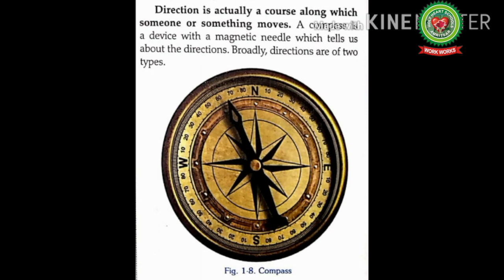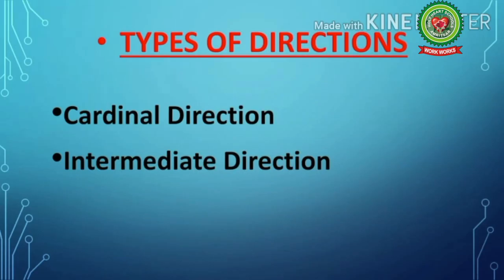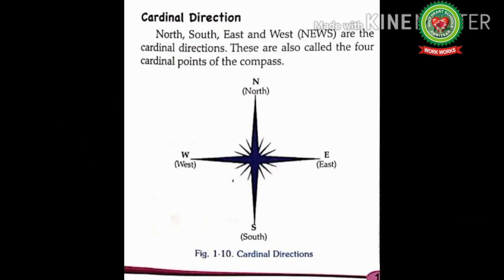See the picture of compass which is given in your book — it is a device used for finding directions. Broadly, directions are of two types. The question rises: how many types of directions are there? The answer is two types — number one: cardinal direction, and number two: intermediate direction. Now come to page number 15. The first type is cardinal direction, which means the four main directions: north, east, south, and west.